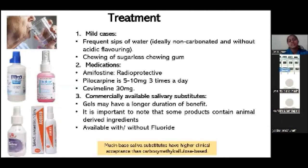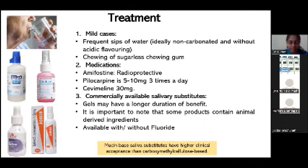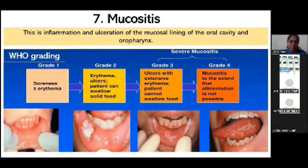There are commercially available salivary substitutes — in India, products like Wet Mouth, Oral Lube, Salivar, and Aquacid. Evidence states the gel form of Aquacid has a longer duration of benefit than the liquid form. Important note: some products contain animal-based ingredients which may be culturally unacceptable. Check if the salivary substitute contains fluoride when prescribing, and go through all ingredients. Evidence also states that mucin-based salivary substitutes have higher clinical acceptance than carboxymethylcellulose-based substitutes.